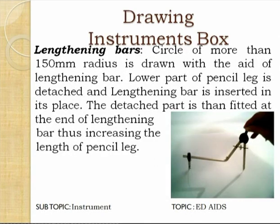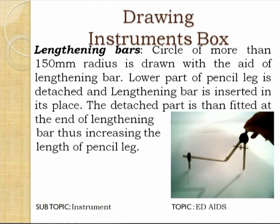The lengthening bar is used when we want to draw circles larger than 150 mm diameter. The lower part of the pencil leg is detachable, and the lengthening bar is inserted in its place; the detached part is then fitted at the end of the lengthening bar. This increases the length of the pencil leg, allowing us to draw circles of more than 150 mm radius with the help of the lengthening bar.